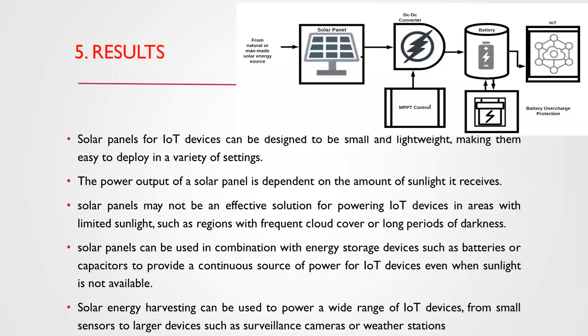Solar panels for IoT devices can be designed to be small and lightweight, making them easy to deploy in a variety of settings. The power output depends on the amount of sunlight received, and solar panels may not be effective in areas with limited sunlight, frequent cloud cover, or long periods of darkness. Solar panels can be used in combination with energy storage devices such as batteries or capacitors to store energy, and can power a wide range of IoT devices from small sensors to large devices such as surveillance cameras or weather stations.